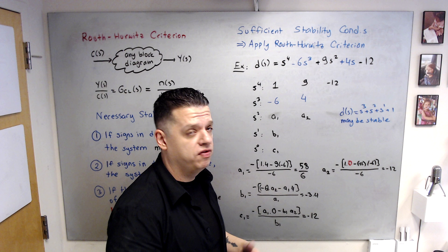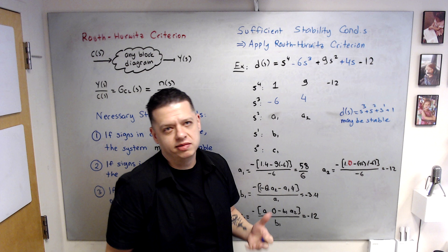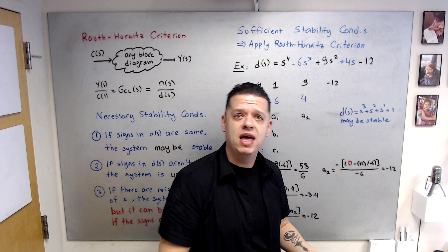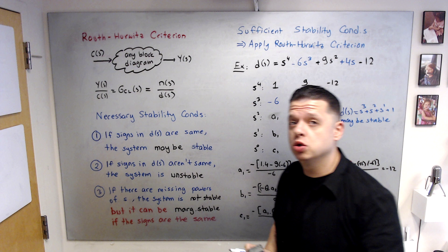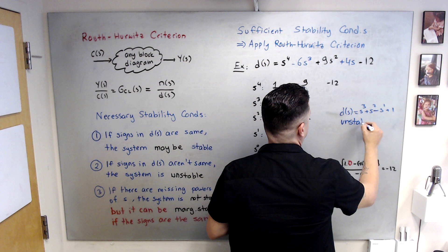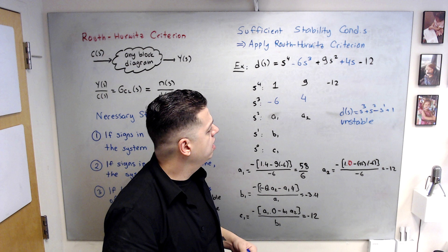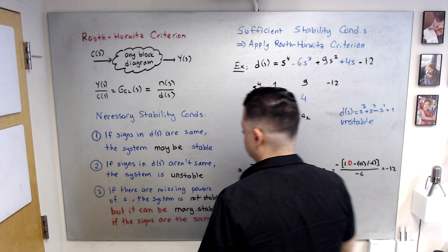We need to proceed further to really say if it is stable. Let's say you are designing a controller for an aircraft — saying 'the aircraft may be stable' is awkward, so this is only the necessary stability condition. Now, if the signs in d(s) are not the same, then the system is for sure unstable. For example, if you have a minus sign, system is unstable. This is good to check: if you end up having terms with different signs, you can say the system is unstable and proceed with a different controller type.